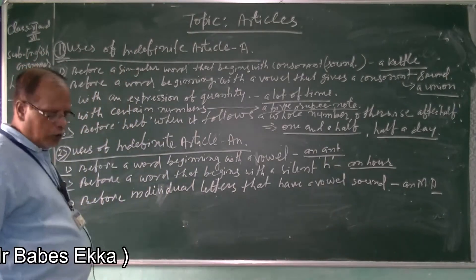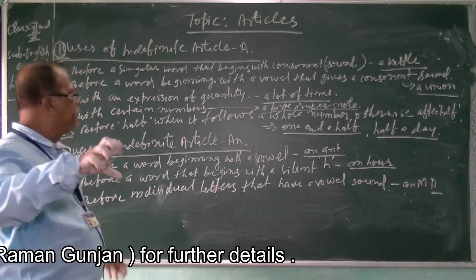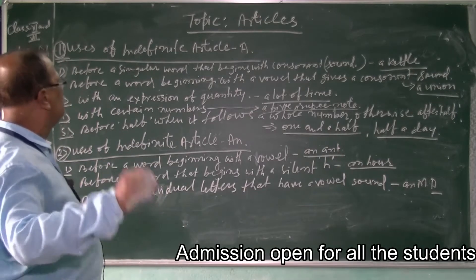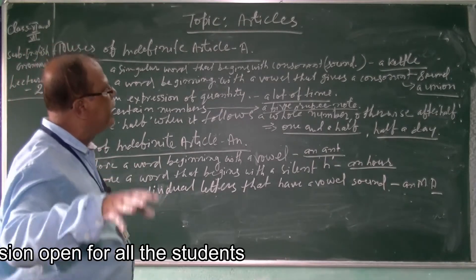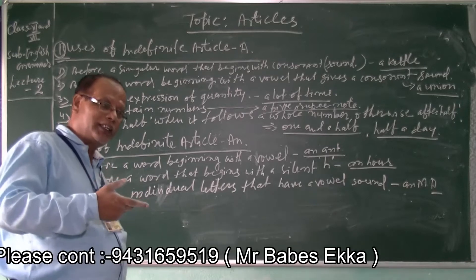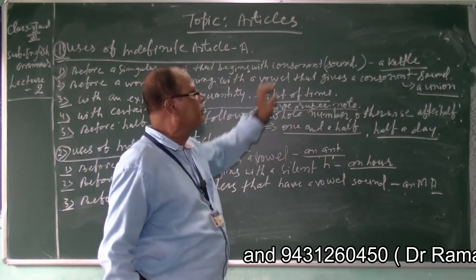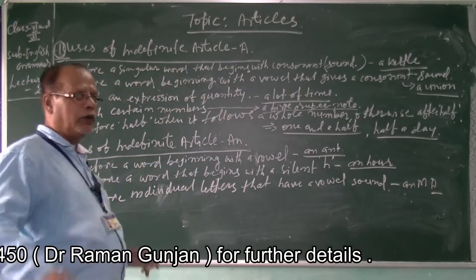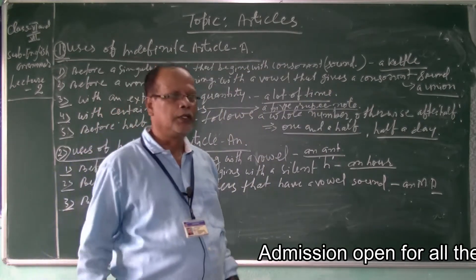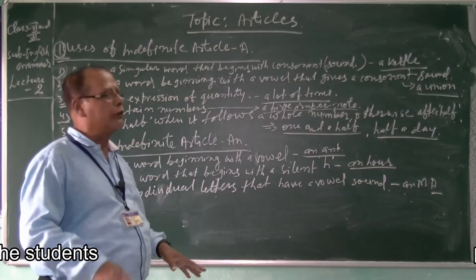When we use A, keep these points in mind. First, use A before a singular word that begins with a consonant sound. The letter is not important — you must take care of the initial sound. If the initial sound is consonant, you must use A. For example, 'a cattle,' 'a cow' — because the initial sound of C and K is consonant, therefore we use A.